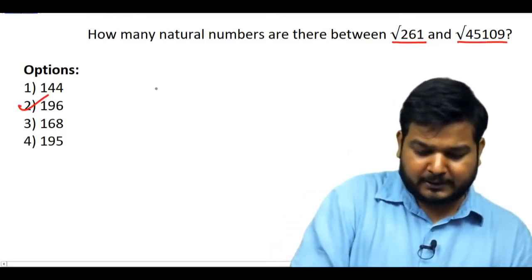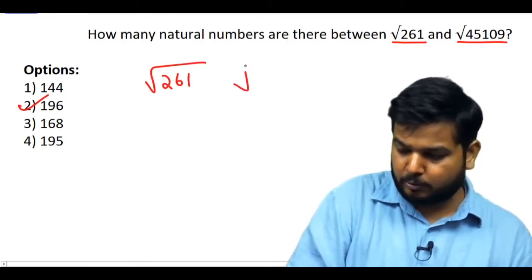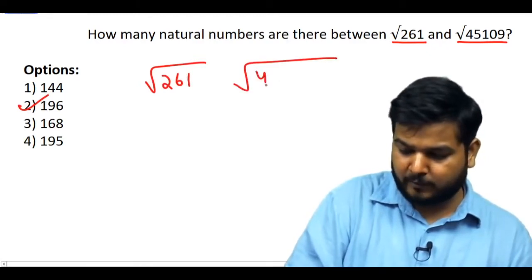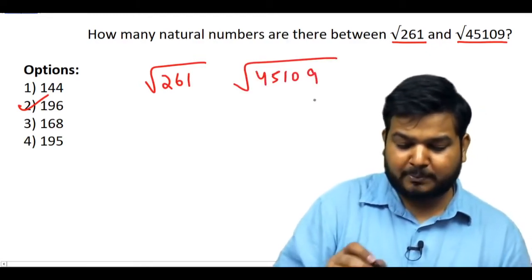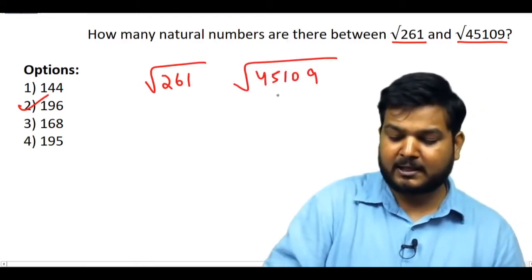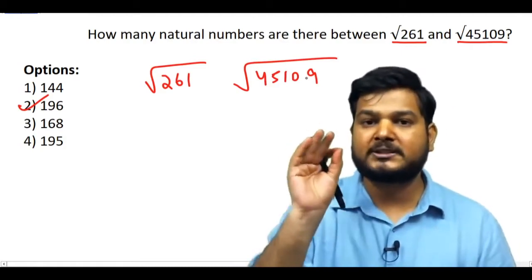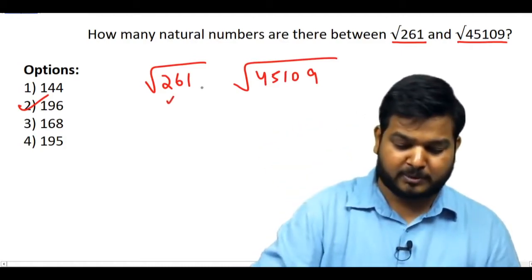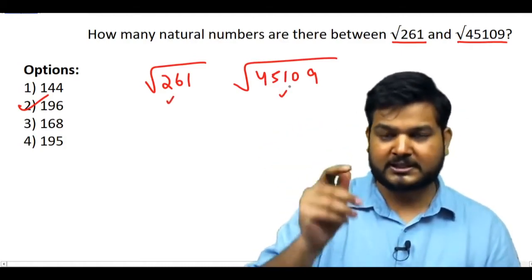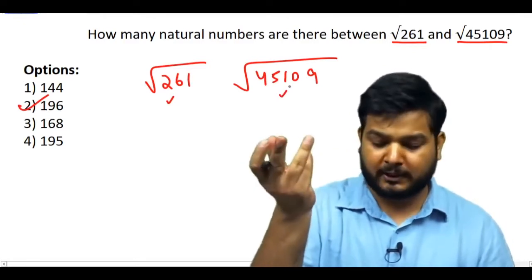For example, I am writing √261 and √45109. To find how many natural numbers lie between them, I need the approximate value of each — I need the nearest perfect squares.